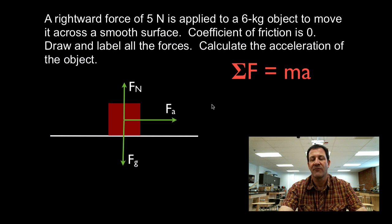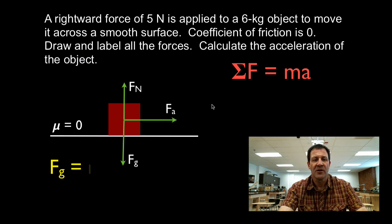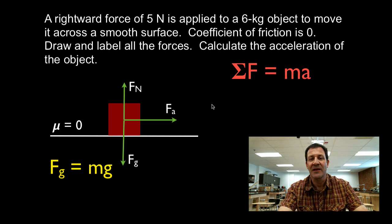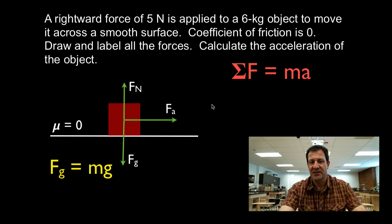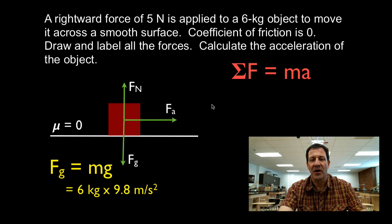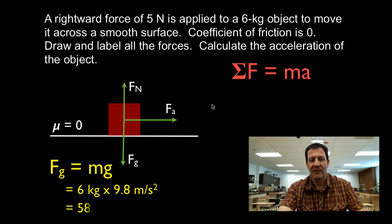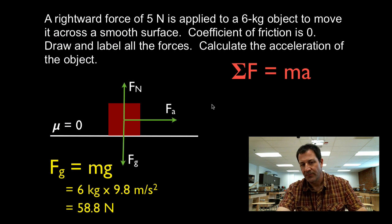We're going to use a special form of Newton's second law to calculate the gravitational force: Fg is equal to mg. Here, g is the acceleration due to gravity — it's a special type of acceleration. All we do is take the mass of the object and, since we're near Earth's surface, the acceleration due to gravity is 9.8 meters per second squared. We take the mass and multiply it by 9.8, and therefore the gravitational force is 58.8 Newtons.